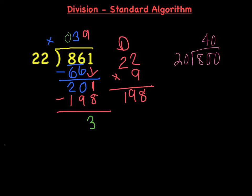So 201 minus 198 is 3. So my final answer then is if I had $861 divided by 22 people, each person would get $39, and there would be a remainder of $3 left. So my final answer then is 39 remainder 3, and I can check my work to see if it's correct. I can tell right now it's reasonable because my prediction or my estimate was 40, and I got the answer 39 remainder 3.